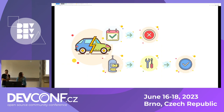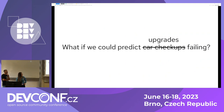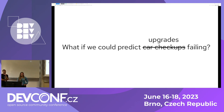What if we could do something different? What if your car were able to tell you if it's going to fail the checkup, and what you need to fix before you actually go? Closer to our example — our application wanted to predict the upgrade failures for our software.